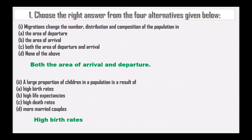Let's solve the textbook exercise. The first question is: choose the right answer from the four alternatives given below. The first option is: migrations change the number, distribution and composition of the population in both the area of arrival and departure.